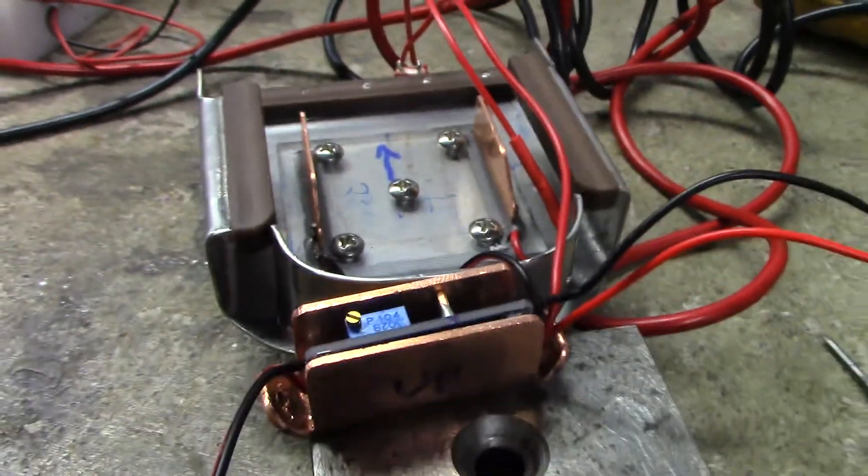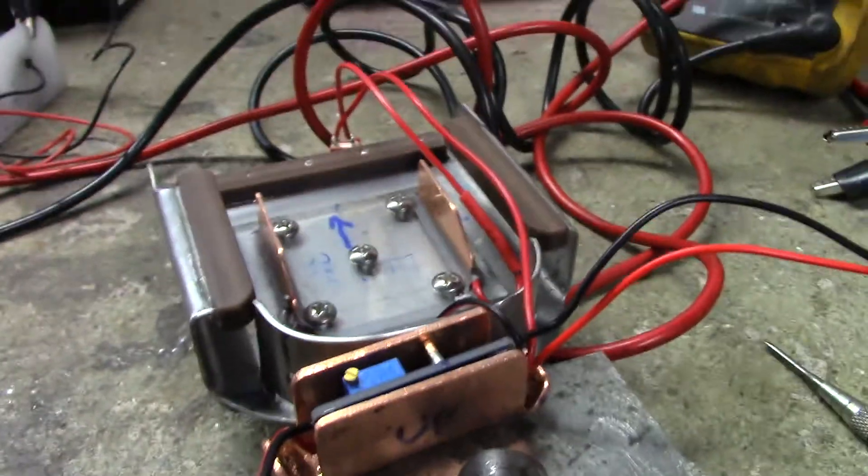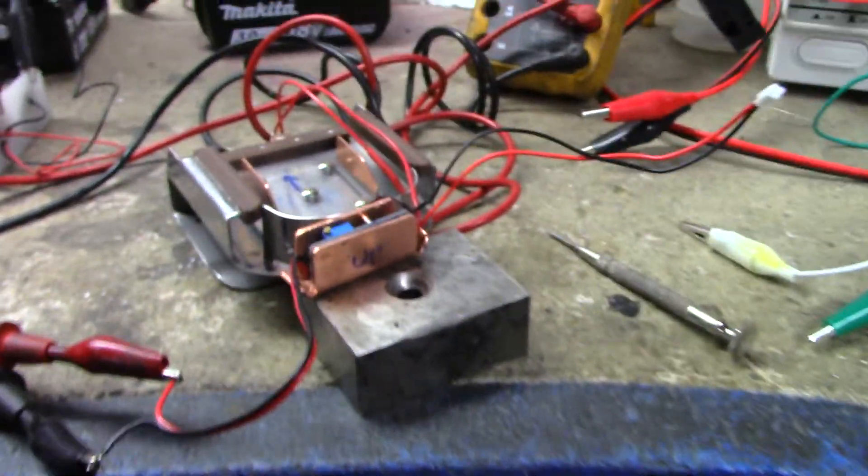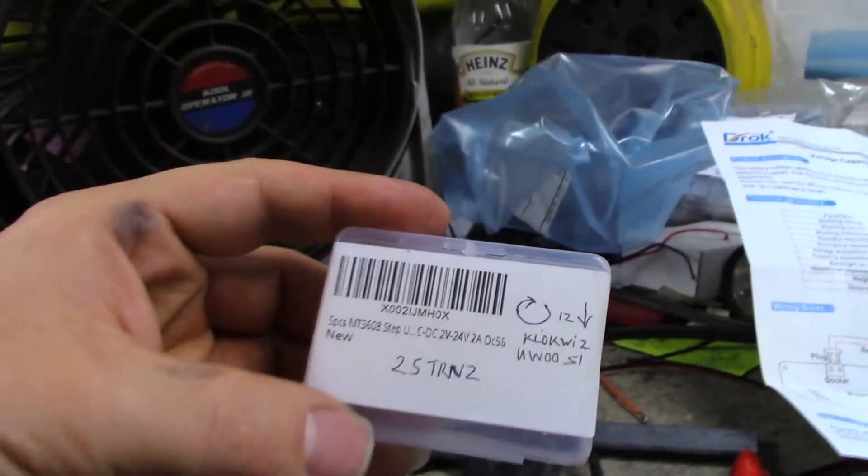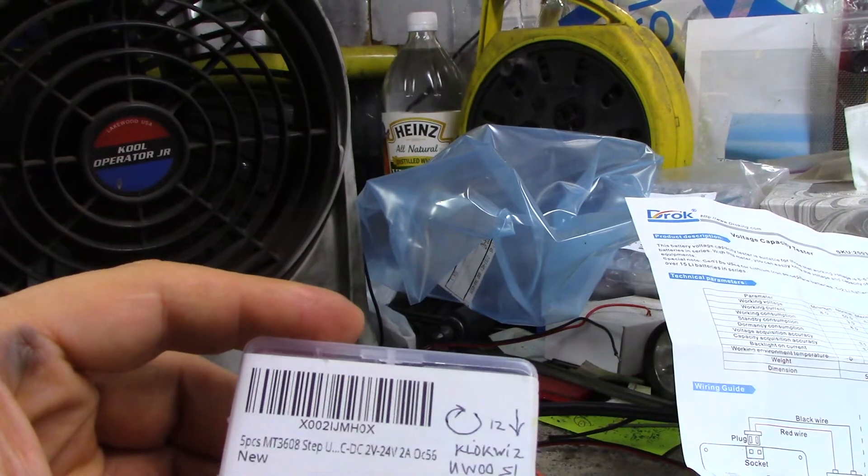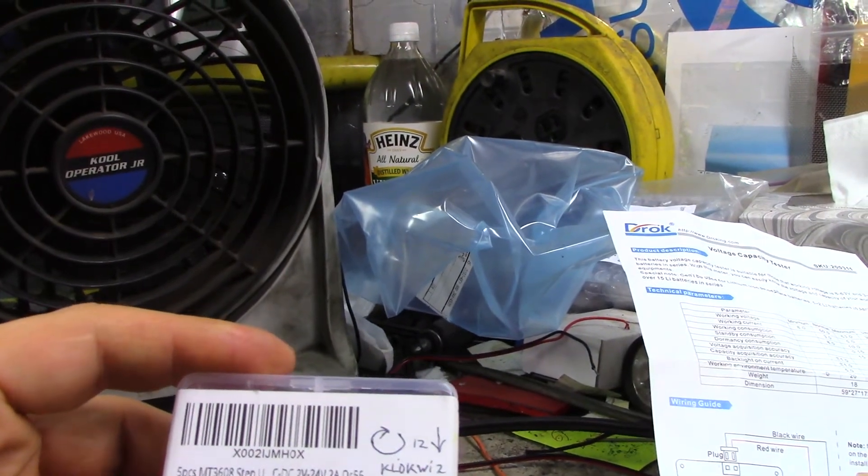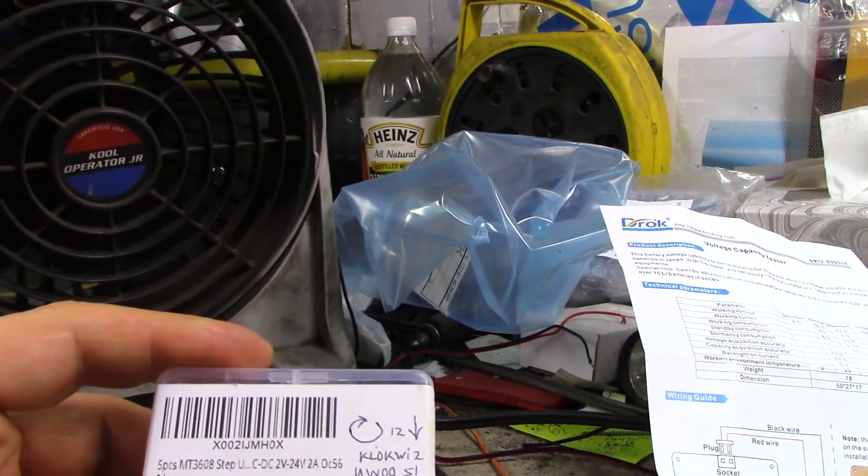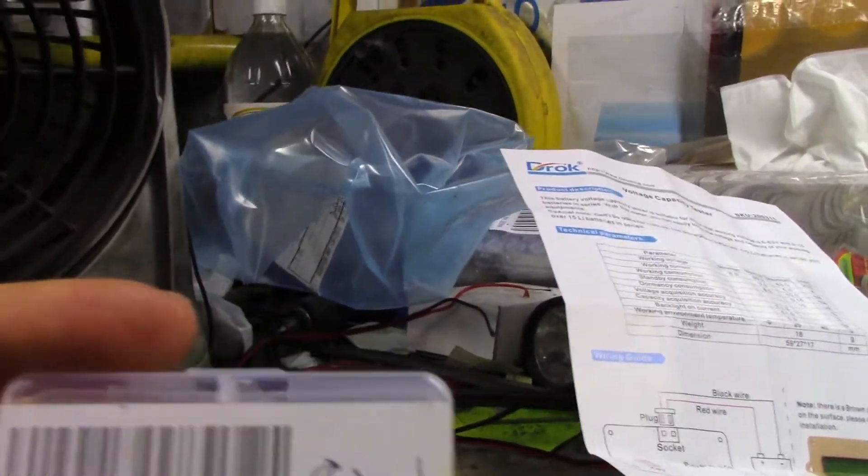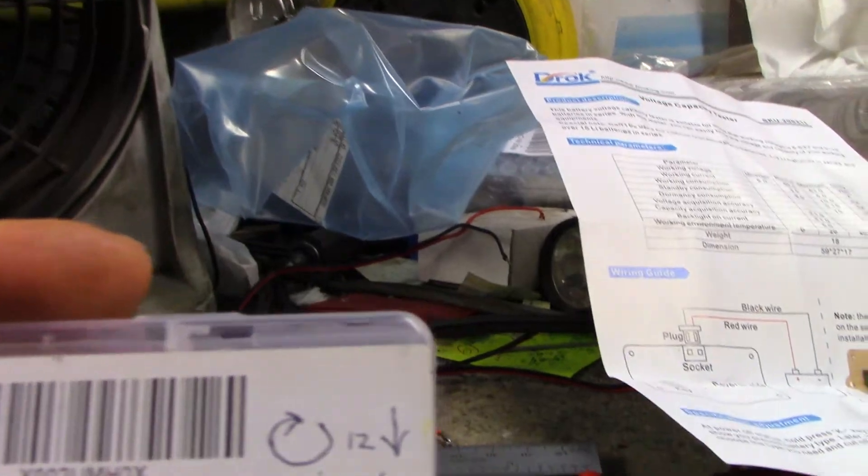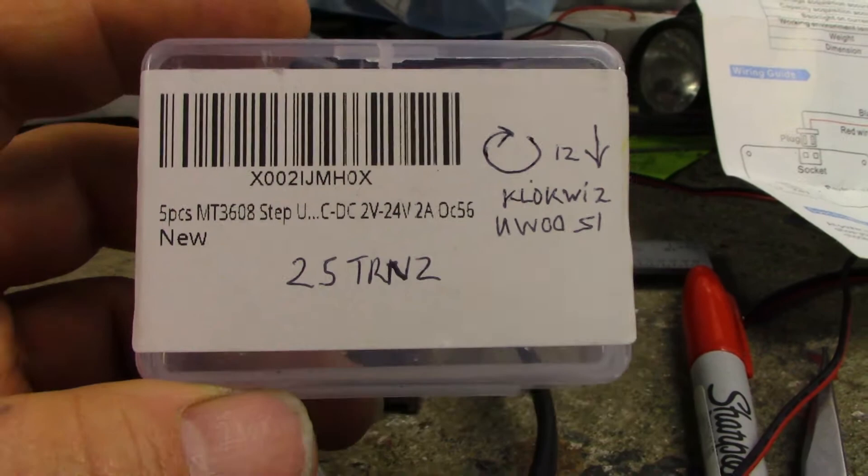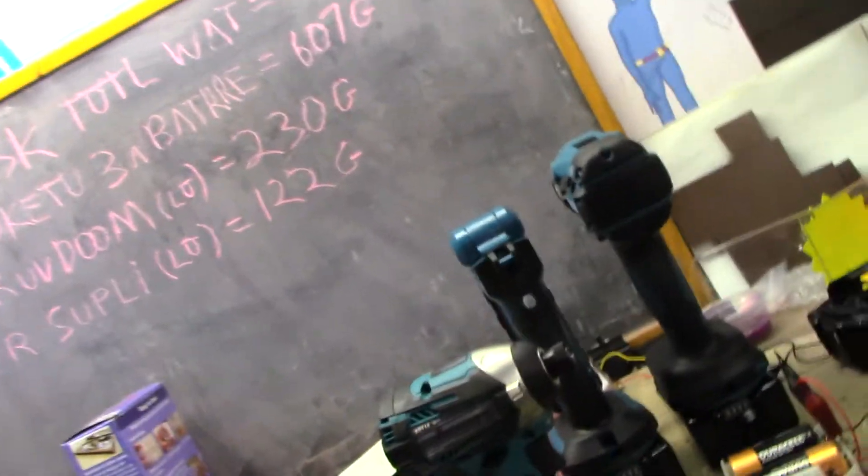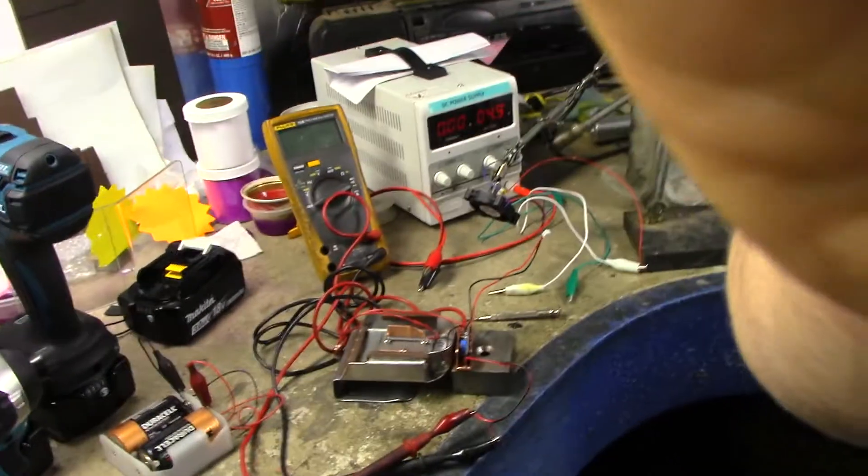So what I'm going to do right now is demonstrate how I'm setting this thing up, hopefully to help other people with the MT3608 step-up DC-DC converter. Here's some useful information: clockwise is down, and it's 25 turns, zero to whatever, zero to 20 or 2 to 26 volts.